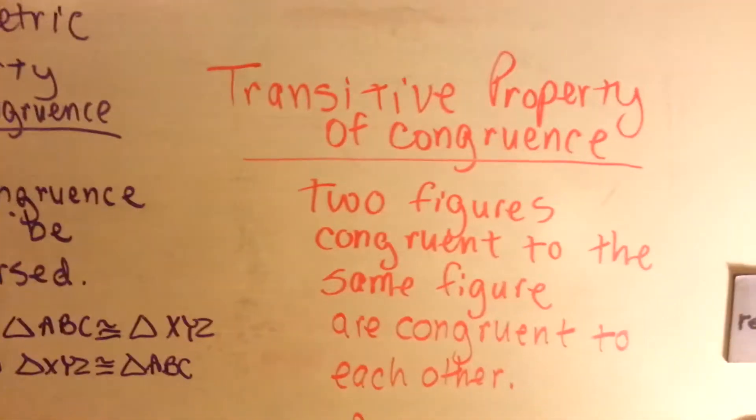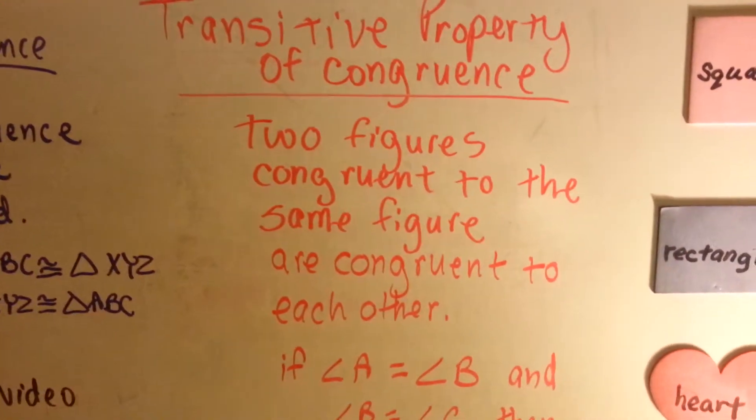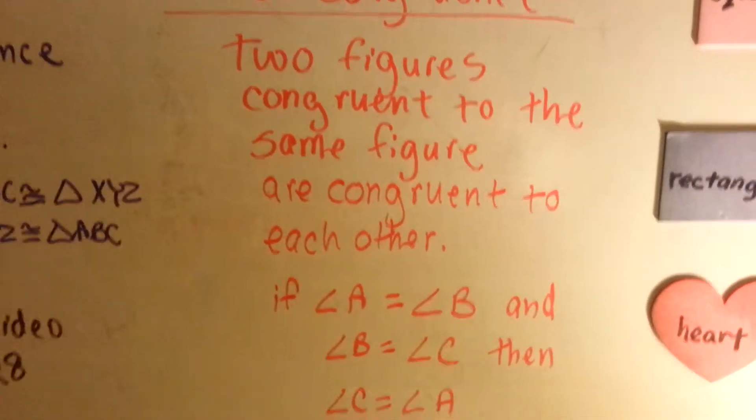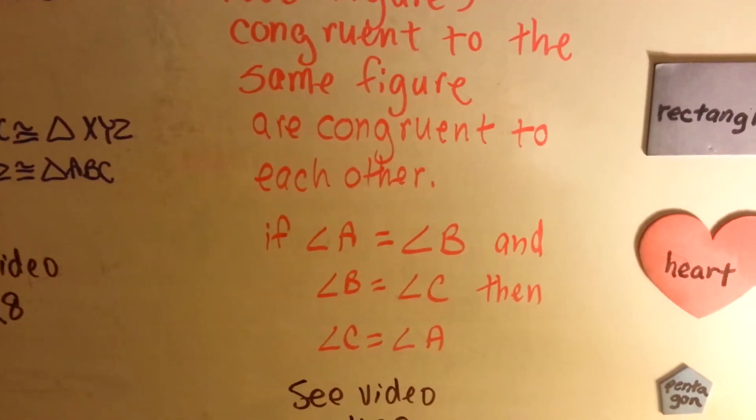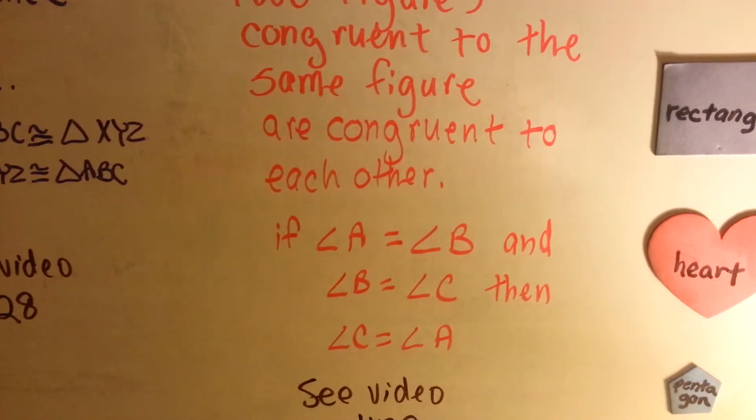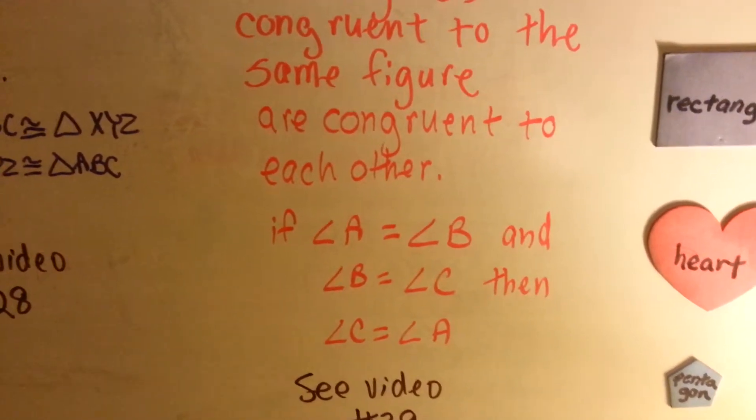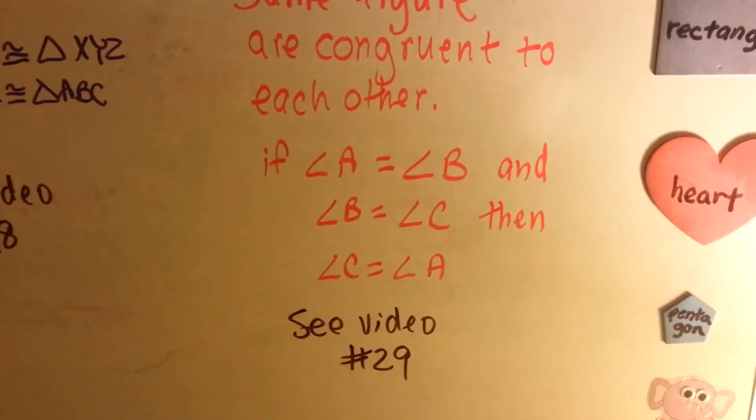The transitive property of congruence says two figures congruent to the same figure are congruent to each other. So if angle A is equal to angle B, and angle B is equal or congruent to angle C, then angle C and angle A are equal or congruent. You can go back and watch video number 29.